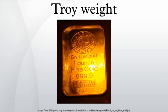Troy weight is a system of units of mass customarily used for precious metals and gemstones. There are 12 troy ounces per troy pound, rather than the 16 ounces per pound found in the more common avoirdupois system. The troy ounce is 480 grains, compared with the avoirdupois ounce, which is 437 and a half grains.